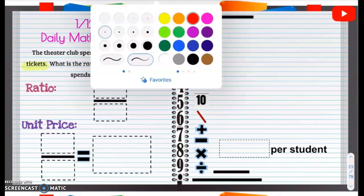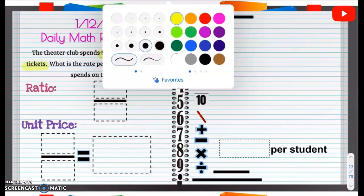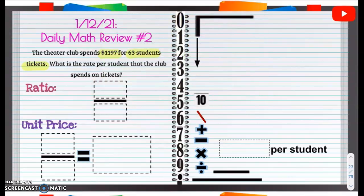We need to figure out the rate per student. So we need to get it to one. We need to find our unit rate. Remember, what goes on top? Money on top. So we're going to have, in our numerator, money on top, $1,197. In our denominator, 63 students.